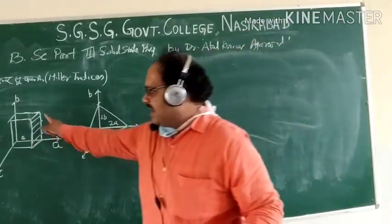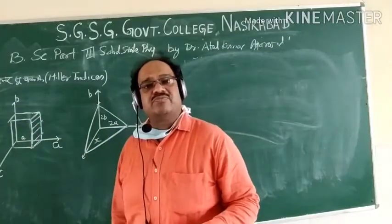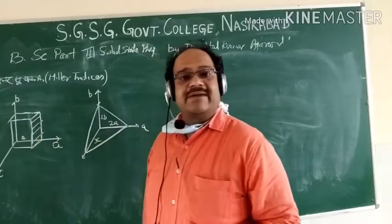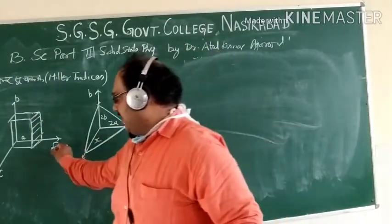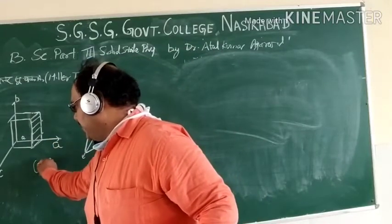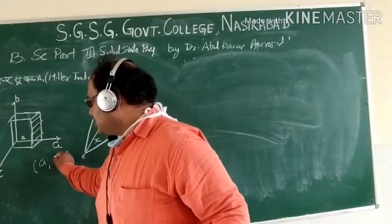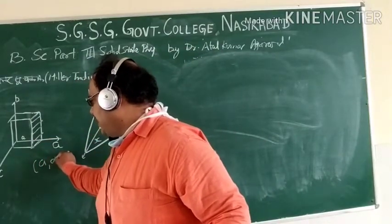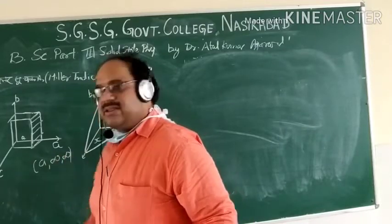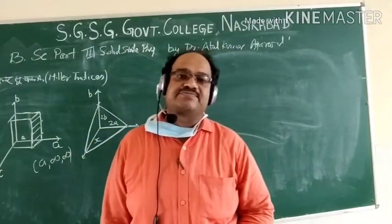If I take a single plane which I have highlighted, if you look at this plane, it cuts this axis at A, but B and C will not be cut — it goes to infinity. It means its coordinate is A, infinity, infinity.